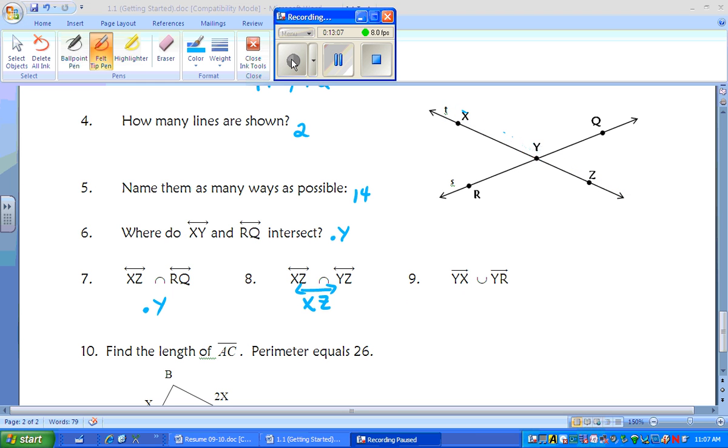Nine. We're focusing on rays here. So we got ray YX and we got union of YR. So we go from Y to R. What are we creating here? We are creating an angle you see there. And you can name the angle, angle XYR or angle RYX, where the vertex point is Y.